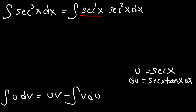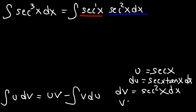The part that remains, secant squared dx, that's going to be dv. Now v is the integral of dv, so the integral of secant squared is tangent x.